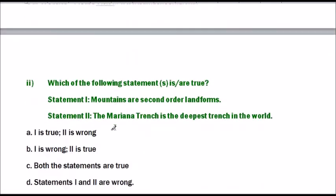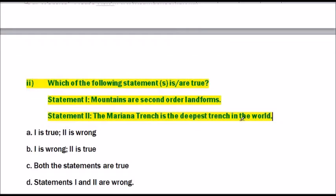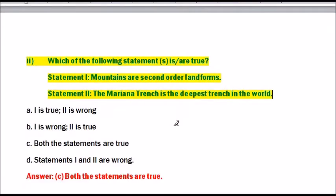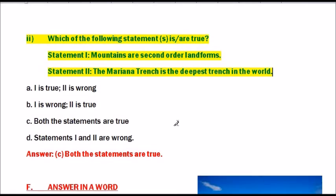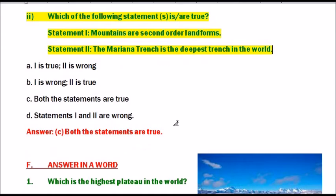Question number 2: Which of the following statement is true? Statement 1: Mountains are second order landforms. Statement 2: Marina Trench is the deepest trench in the world. Options: A (1 is true, 2 is wrong), B (1 is wrong, 2 is true), C (both statements are true), D (both are wrong). The answer is C: both the statements are true.